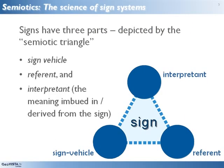According to the semiotic model that I adopt in How Maps Work, all signs have three parts: the sign vehicle and the referent, which I've already mentioned, plus an interpretant. This latter term is used to refer to the meaning associated with the sign.